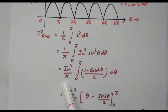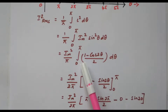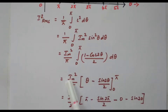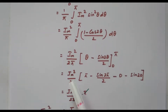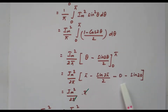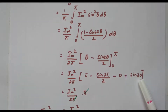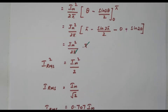Im² is taken outside giving Im²/π. To integrate, sin²θ = (1 − cos2θ)/2. With the factor of 2 taken outside, we have Im²/2π. Integrating 1 gives θ and integrating cos2θ gives sin2θ/2, so we get θ − sin2θ/2. Substituting the limits 0 to π: [π − sin(2π)/2] − [0 − sin(0)/2]. Since sin(2π) = 0 and sin(0) = 0, only π remains. The π cancels with the denominator.